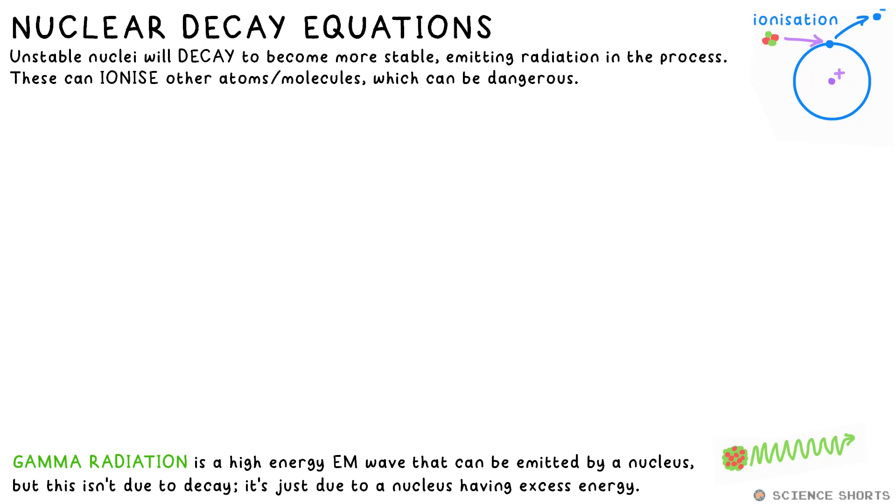But there are two other types of ionizing radiation nuclei can emit too. But these are actual particles and they're emitted when nuclei decay, they change, they break down. Generally the more neutrons an isotope has the more unstable it is and the more likely it is to decay. Heavier nuclei like americium-241 decay by alpha decay to become more stable. The nucleus will emit a bundle of two protons and two neutrons, what we just call an alpha particle.